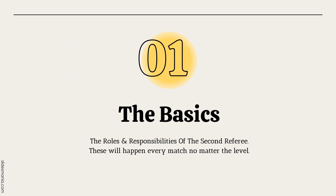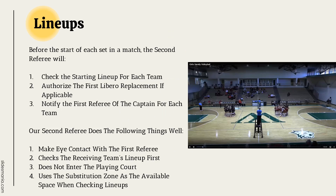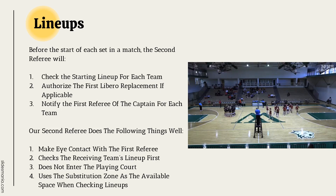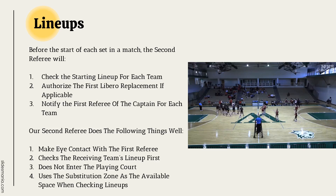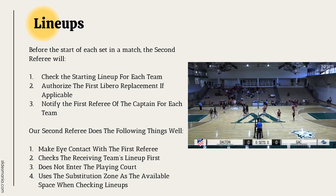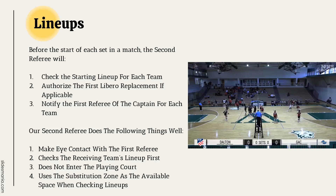Chapter 1: The Basics. These are the roles and responsibilities of the second referee that will happen every match, no matter the level. Following the bringing of the teams together, at the start of each set the second referee will check the starting lineup for each team and authorize the first libero replacement, if applicable.